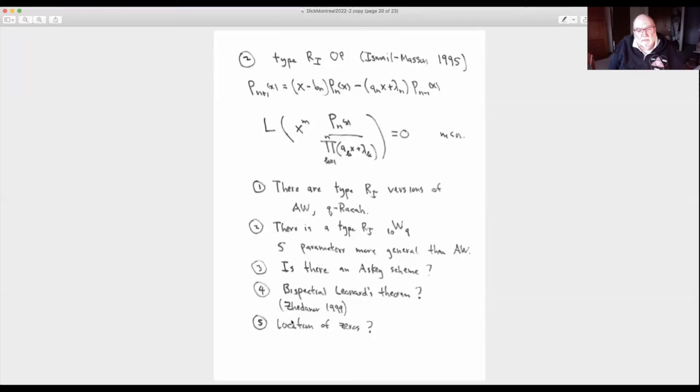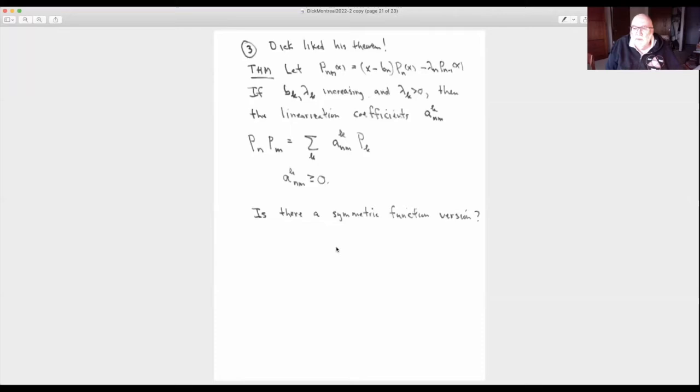What about the location of the zeros for these polynomials? Do you have interlacing? Are they real? Do you need something to be positive definite? I don't know anything about that. But I think these type R1s are pretty much an open area. There are some combinatorial interpretations of these things. But for these basic questions, I just don't know.